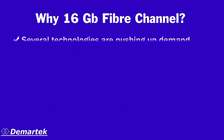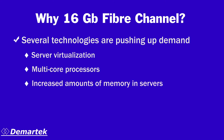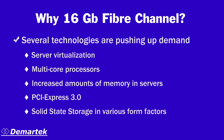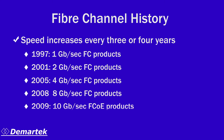Several technologies are pushing up the demand for 16 gig fiber channel. These include server virtualization, multi-core processors, ever-increasing amounts of memory in servers, PCI Express 3.0, and solid-state storage in all of its various form factors. 16 gig fiber channel is following the pattern of doubling its speed every three or four years ever since the first 1 gig fiber channel products were introduced back in 1997.